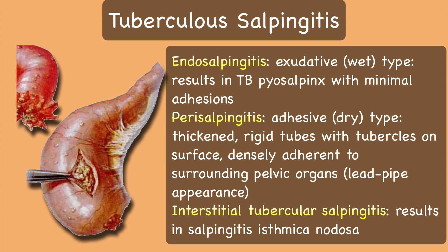The ampulla is the most commonly involved site in the fallopian tube, followed by the isthmus. Tuberculosis salpingitis is of three types. The first type is tuberculosis endosalpingitis. In this wet or exudative type of endosalpingitis, the tube may be significantly enlarged. Although a large pyosalpinx may form, these tubes show few adhesions and are usually reasonably mobile. Frequently the organs contain a large amount of caseous material plus purulent exudate from secondary infection. This is a relatively acute phase of the infection process.